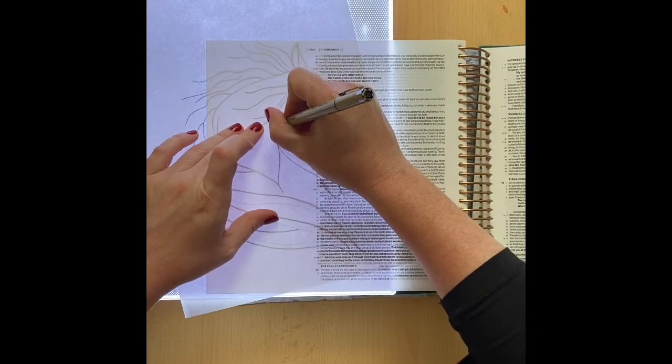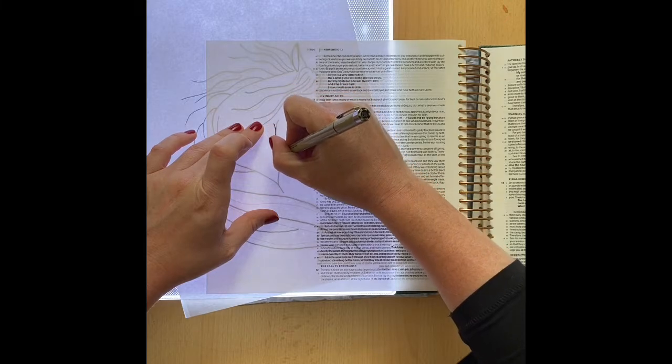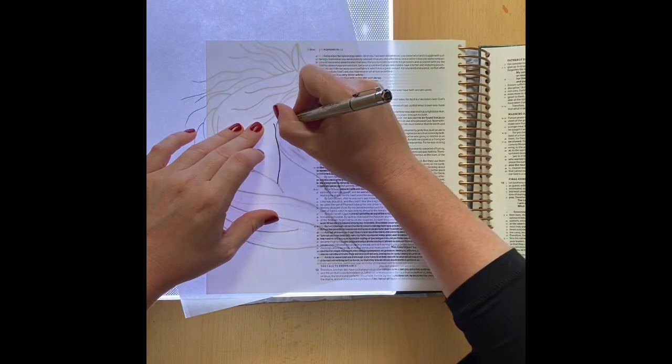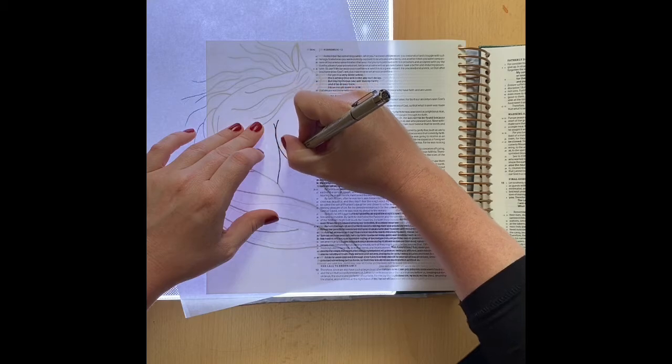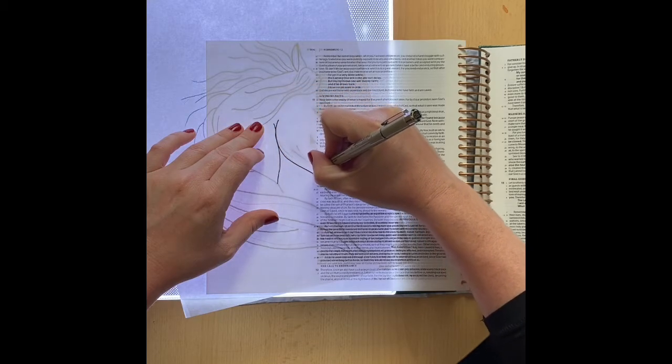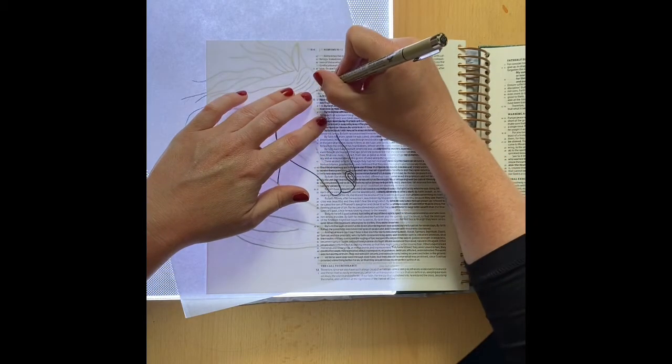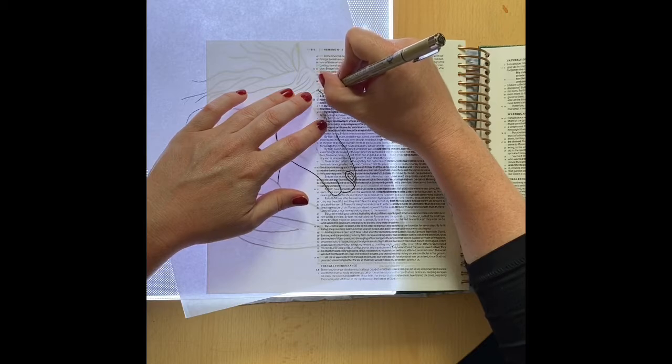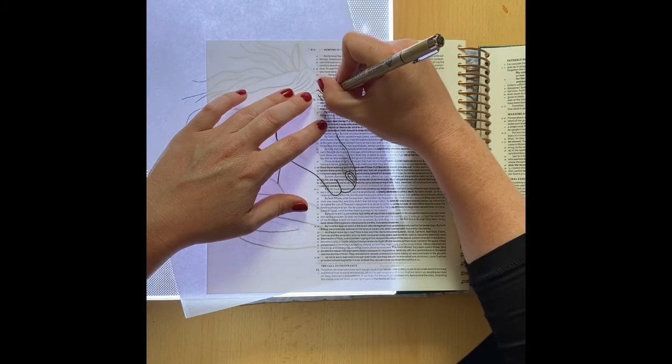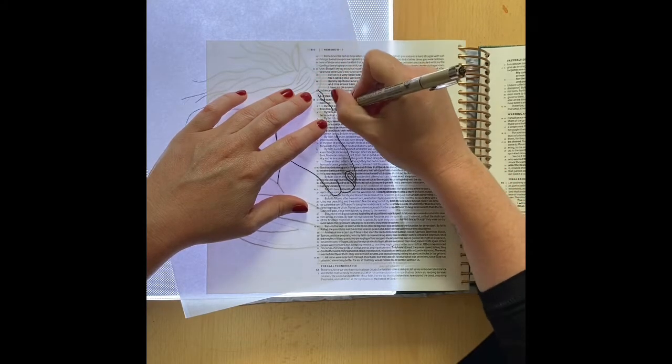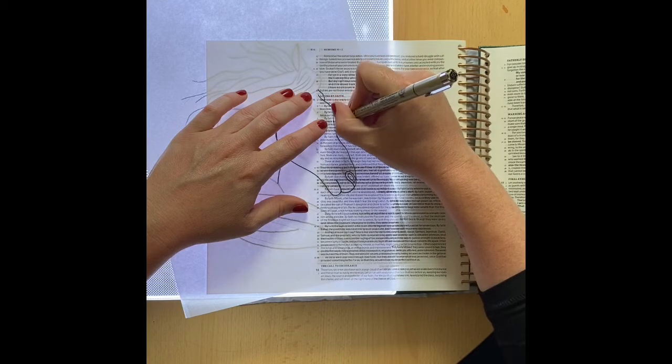So while I'm doing that the verse that we're covering today is Hebrews 12:1-2. Therefore, since we also have such a large crowd of witnesses surrounding us, let us lay aside our hindrances and the sin that so easily ensnares us. Let us run with endurance the race that lies before us.